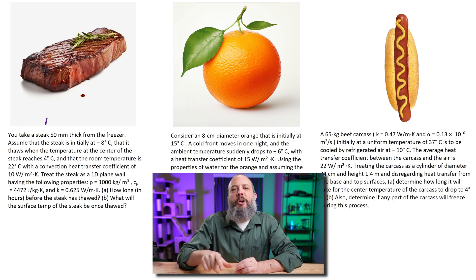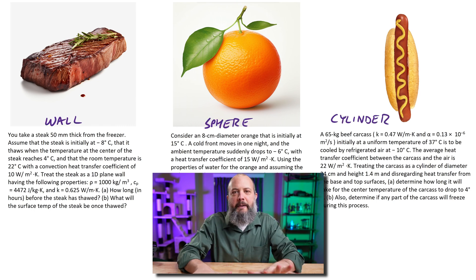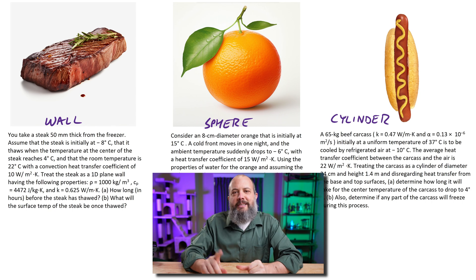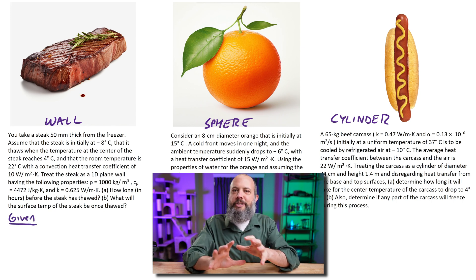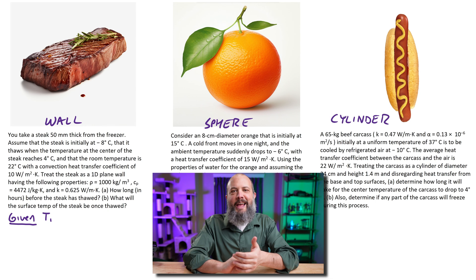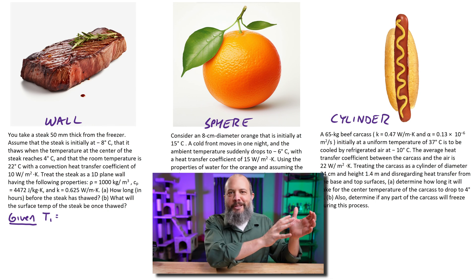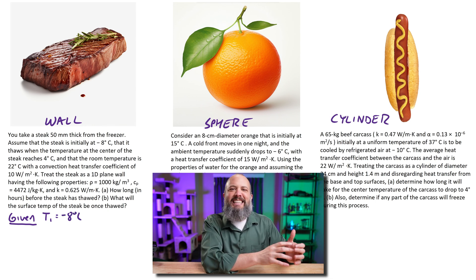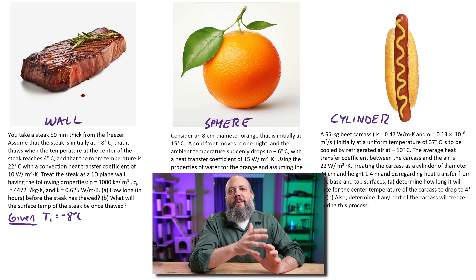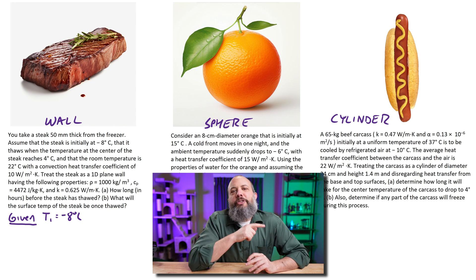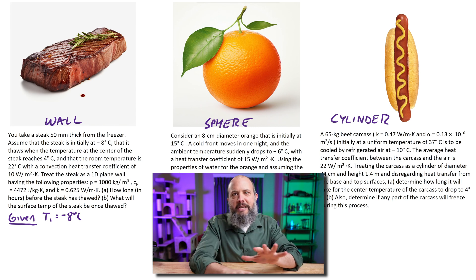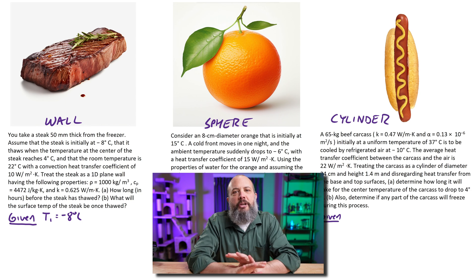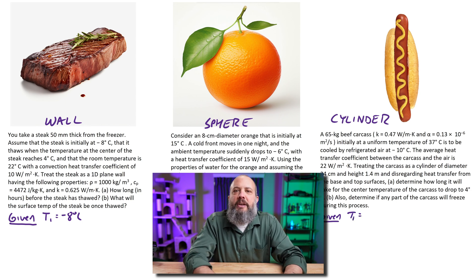This transient conduction problem is actually going to be six problems in one. We've got a steak that we're going to model as a wall, an orange being modeled as a sphere, and a hot dog that's going to represent a beef carcass as a cylinder. We're going to solve them all the way through to surface temperature, which is going to be the hardest, longest transient conduction problems you're going to have in your heat transfer course.